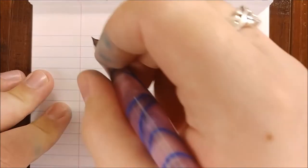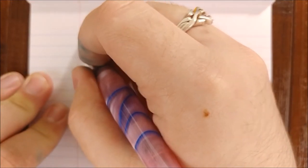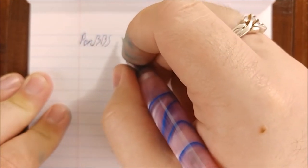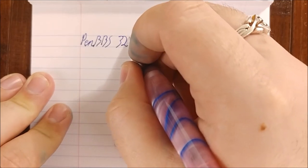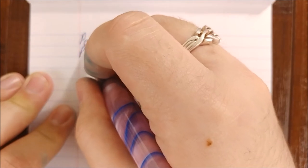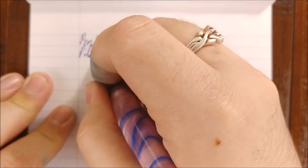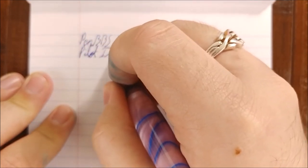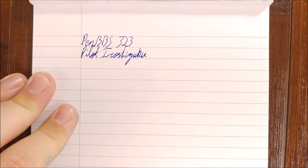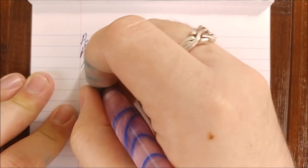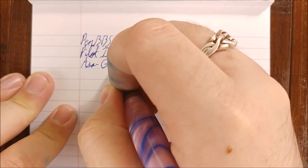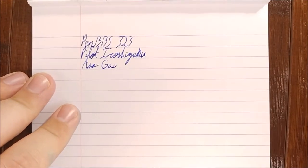On to the writing sample. So again, this is the Pen BBS 323, and the ink is Pilot Iroshizuku Asa-gao. This ink was initially very boring to me, but it's very simple and it flows very well, so I found myself using it to test out new pens and make sure they were working properly.